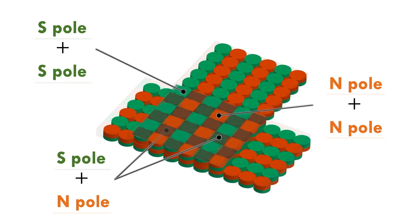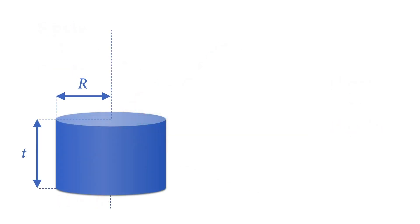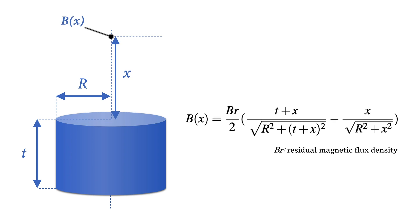Then, to simplify the magnetic calculation, we assume the patterned magnetic sheets as dozens of small cylindrical magnets. With the cylindrical magnets, the magnetic flux density on the central axis can be easily calculated. For instance, at a point x mm away from the center top of the magnet with radius r and thickness t can be estimated by this formula.